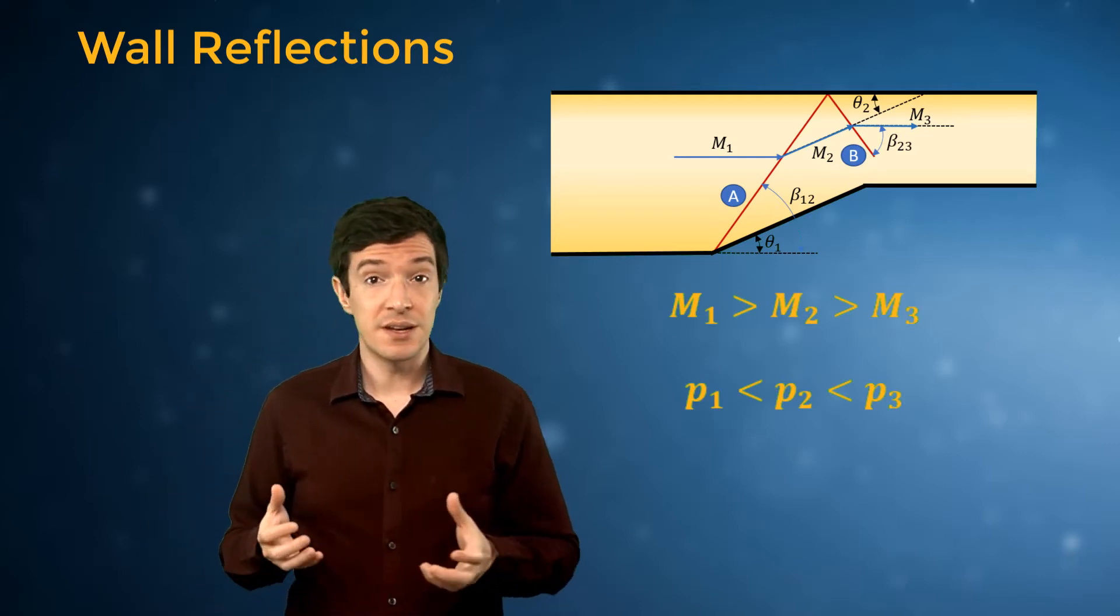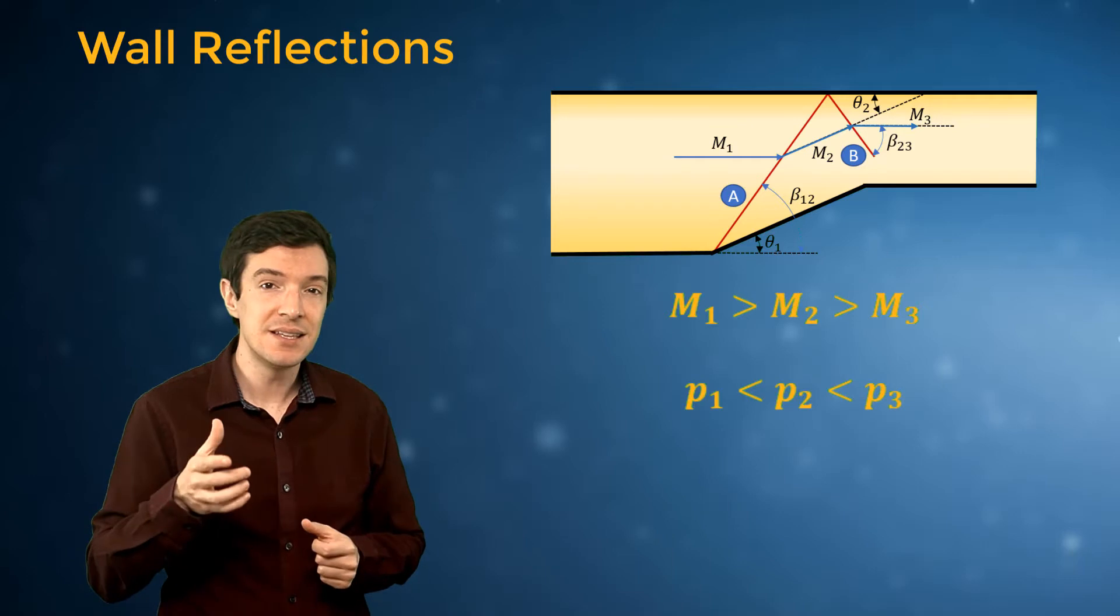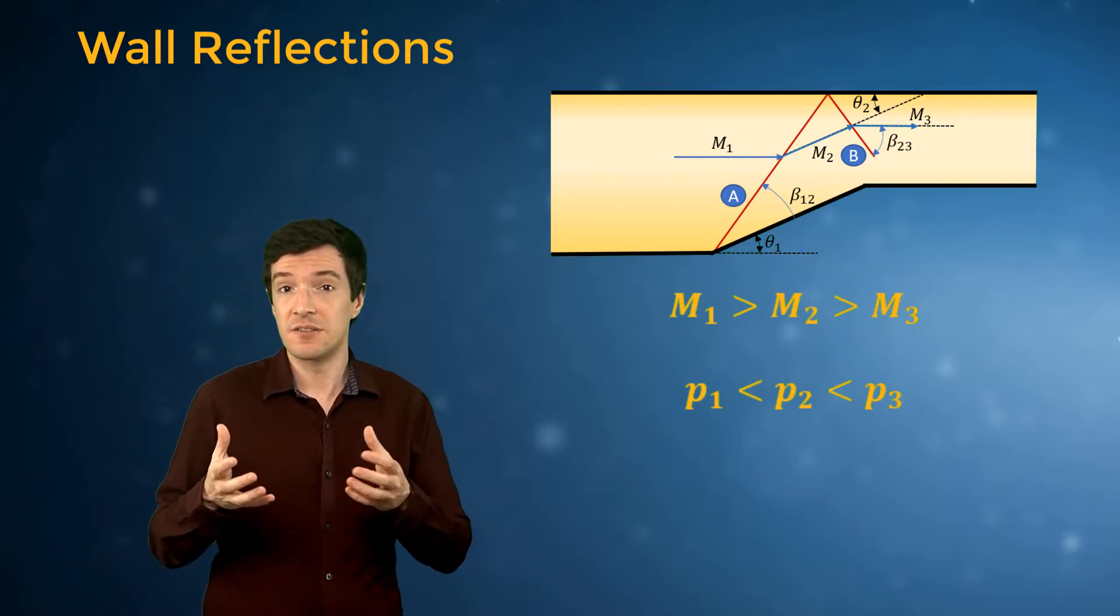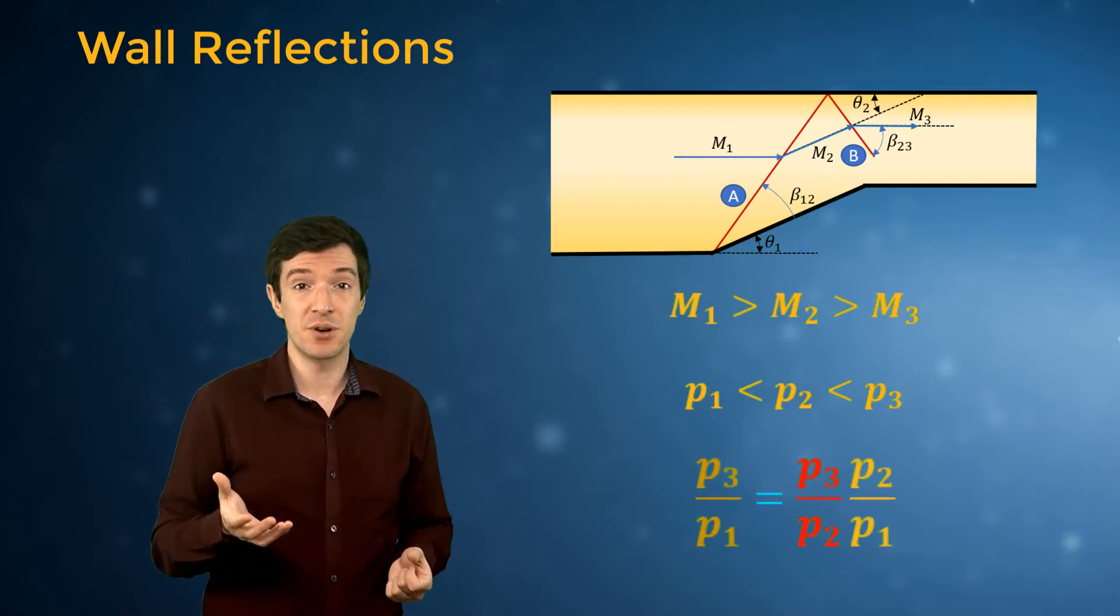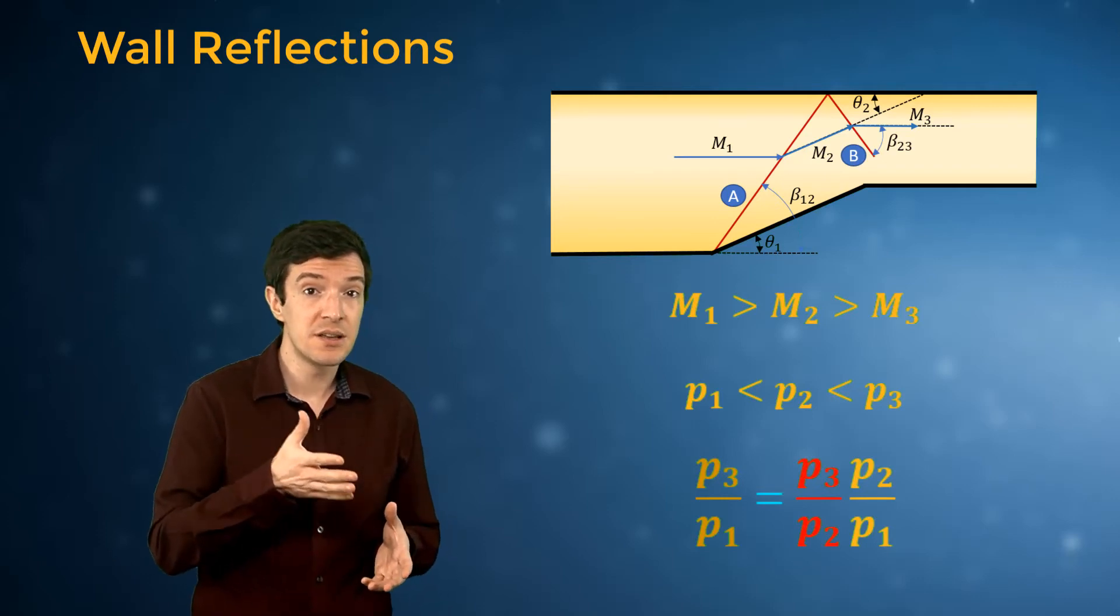Using the oblique shock relations, we can estimate these flow conditions. The strength of the reflection is given by the product of the individual shock strengths.